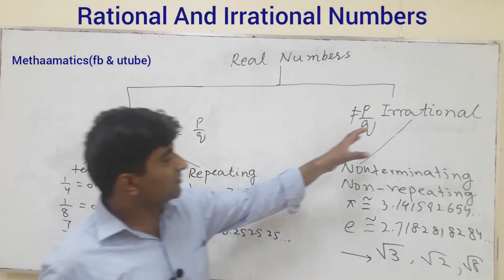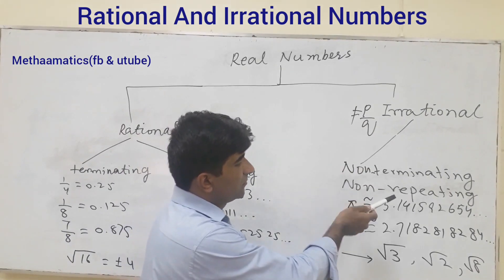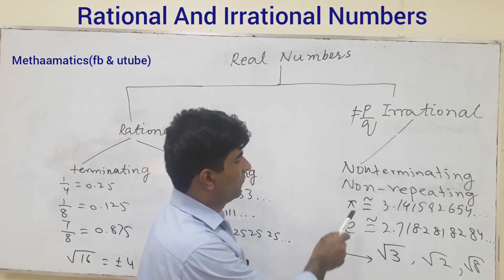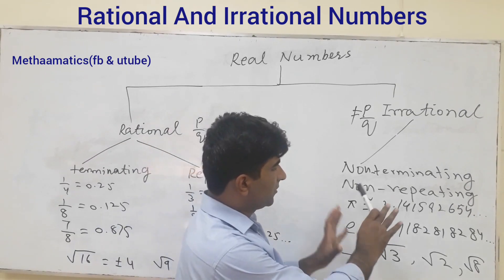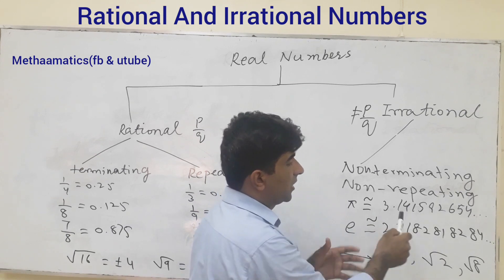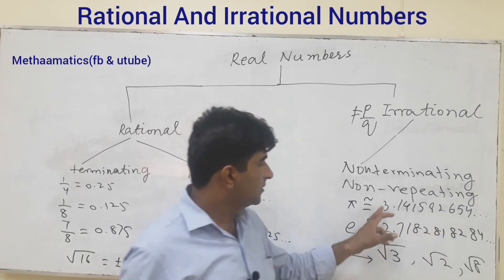While irrational numbers neither repeat nor terminate. For example, value of pi. Here you will see there is no repeating block, nor does it terminate. See here, 3.141592...